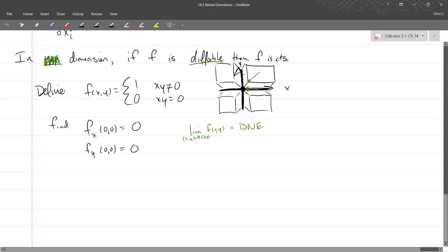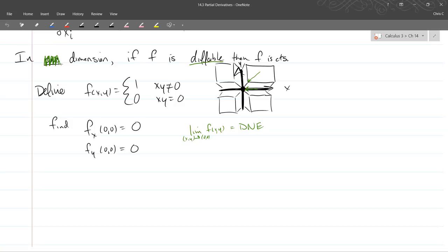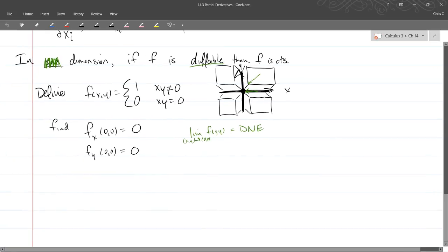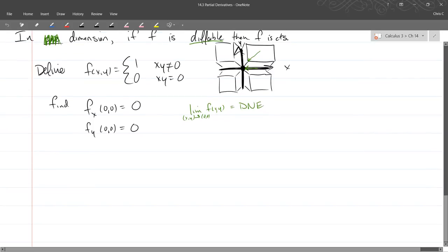So we just went through an example that had two nice derivatives, however, the function was not continuous. So we're going to have the Mixed Derivative Theorem.